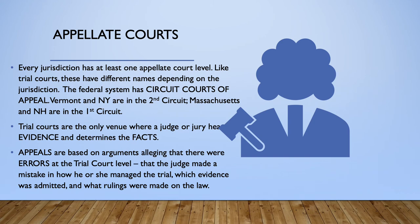Every jurisdiction has at least one appellate court level. Like trial courts, these have different names depending on the jurisdiction. The federal system calls these circuit courts of appeal, and they're called circuit courts because back in the day the appellate court justice used to get on his horse and ride from state to state to hear appeals on a circuit. Now of course we have great big courthouses and no one's riding their horse from court to court. Vermont and New York are in the Second Circuit Court of Appeals, whose courthouse is in Manhattan, and Massachusetts, New Hampshire, and Maine are in the First Circuit Court of Appeals, located in Boston.